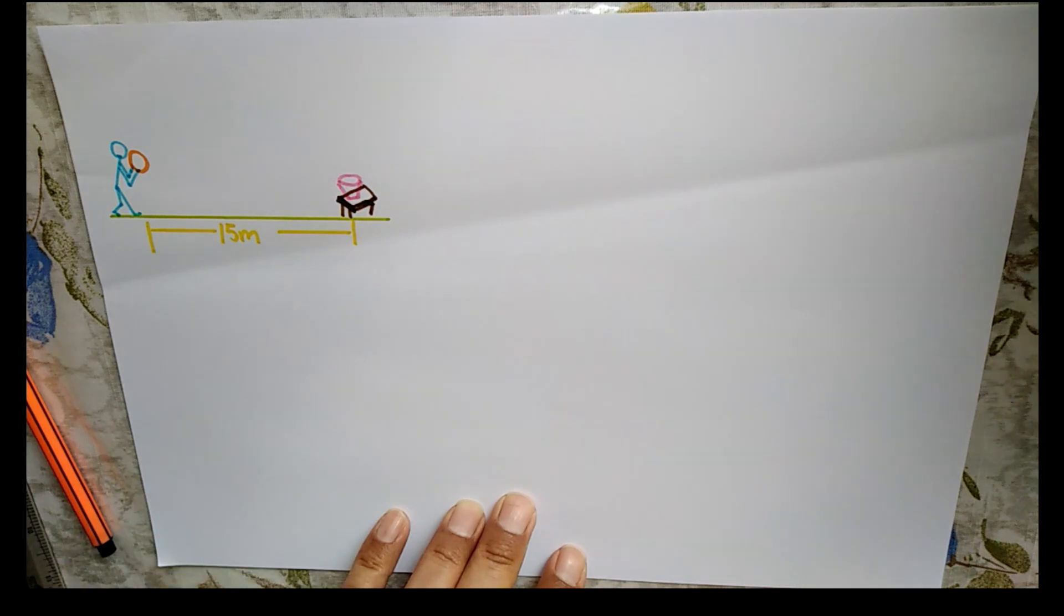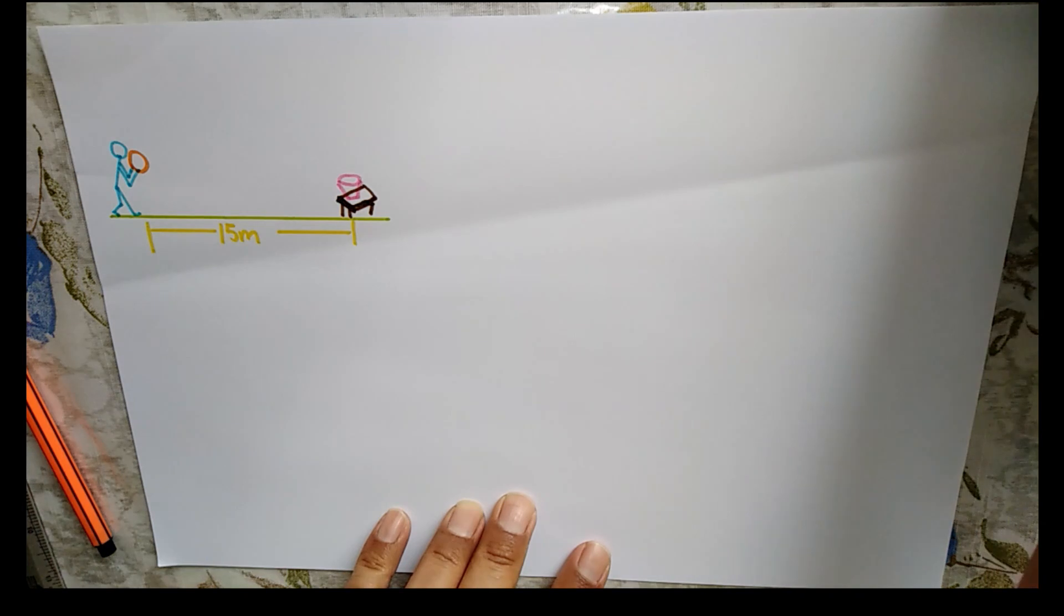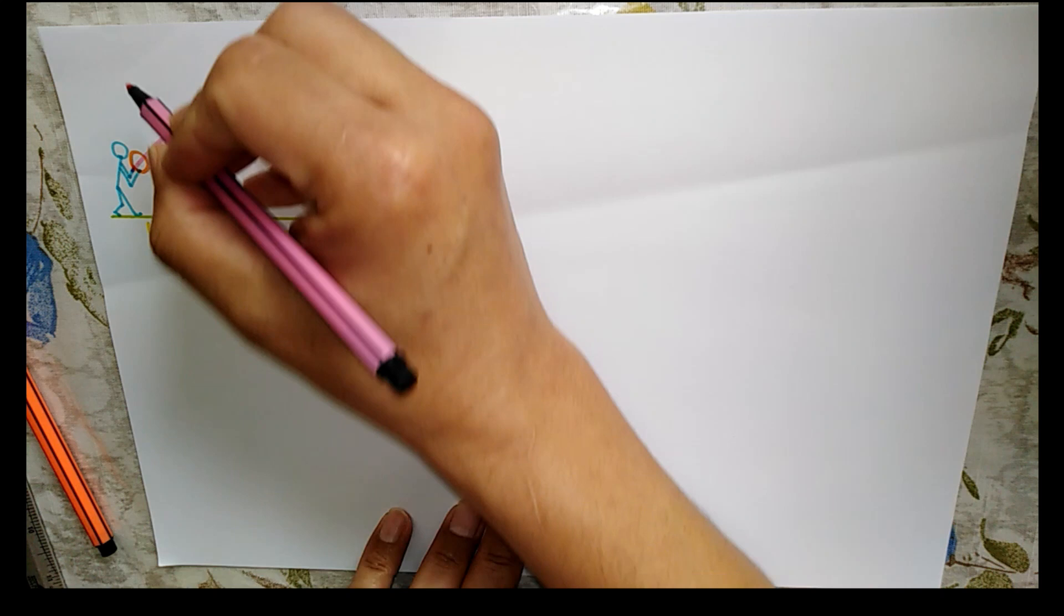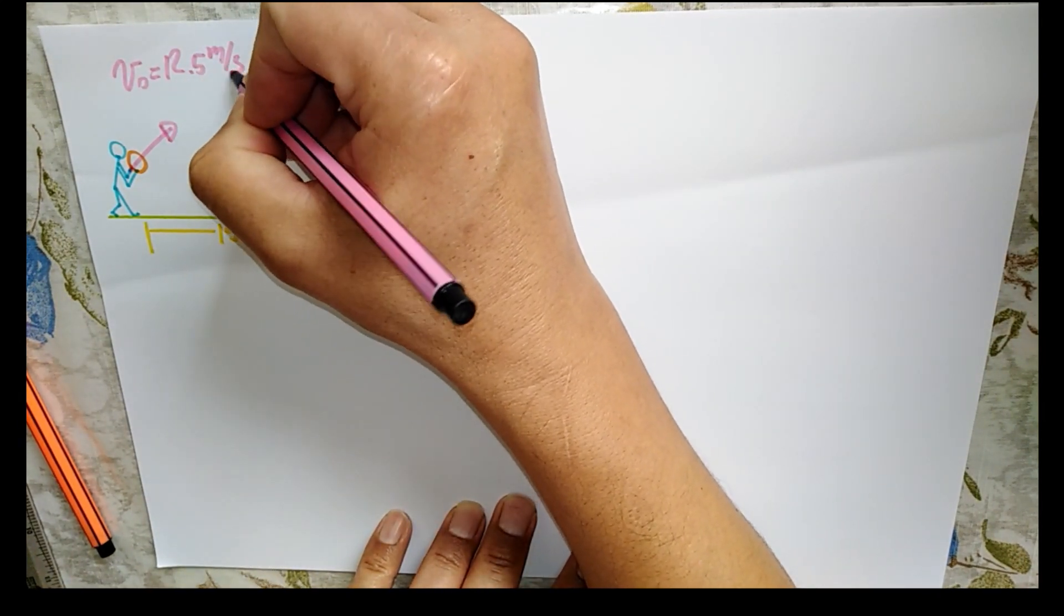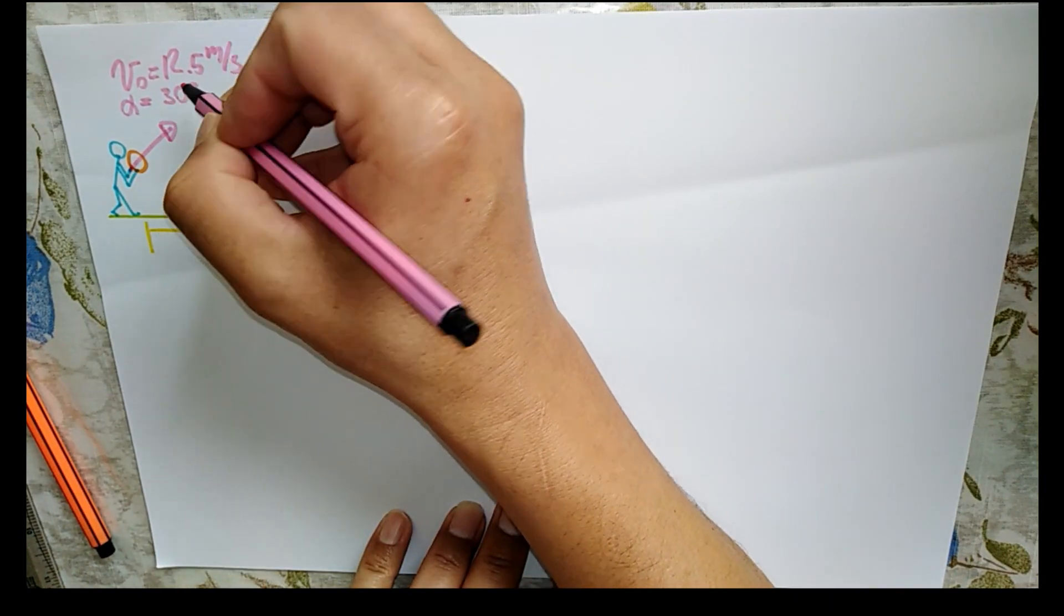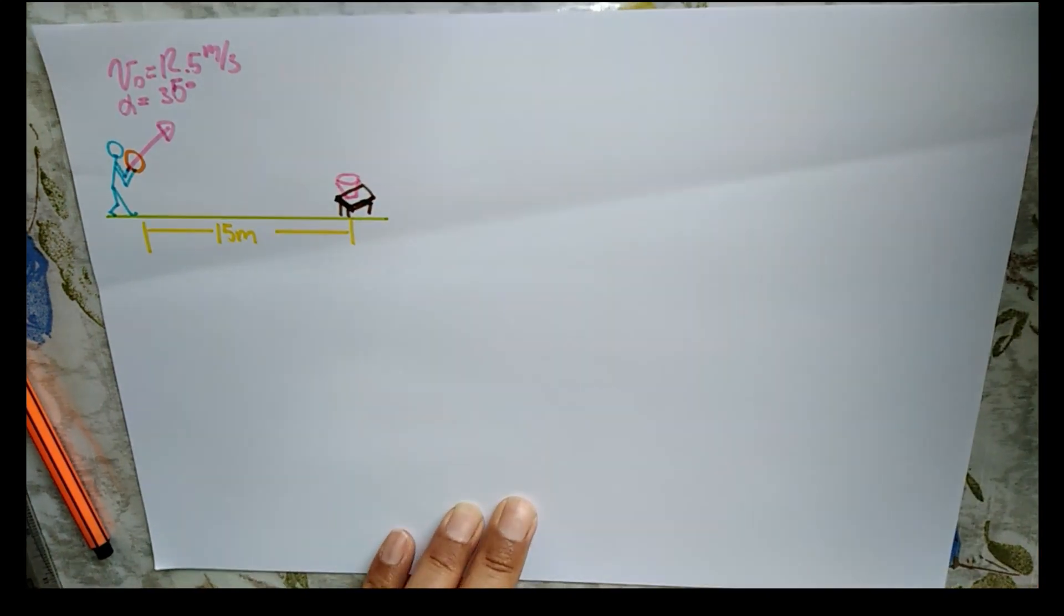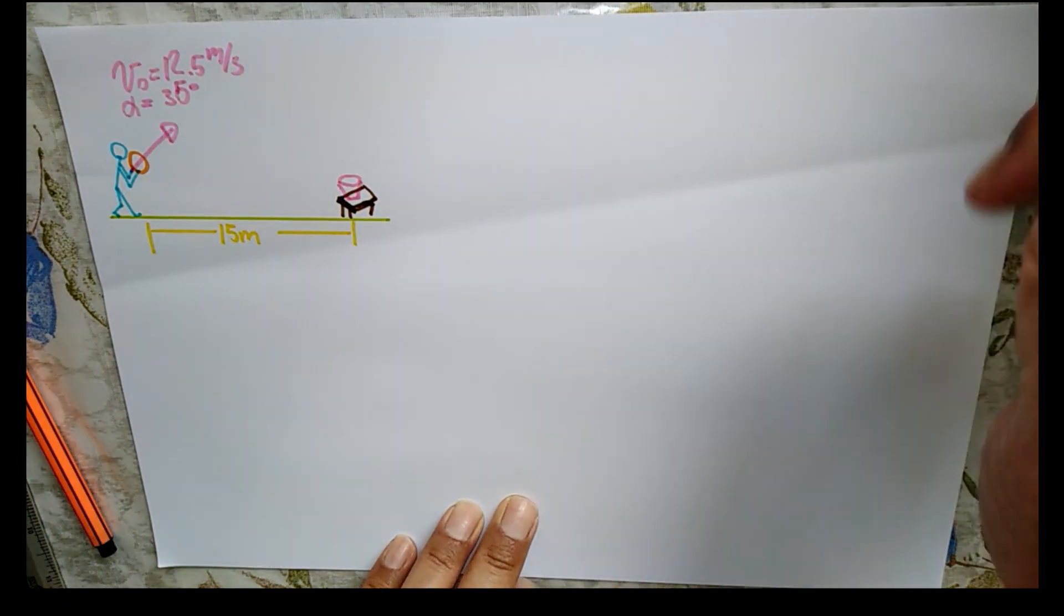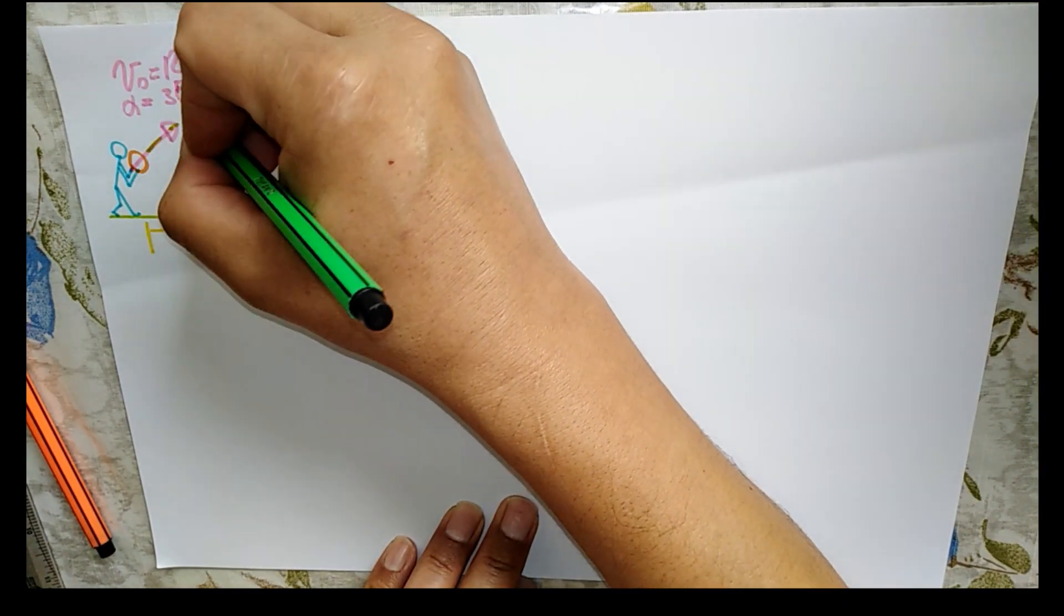Bueno, entonces veamos. Aquí tenemos a Juan lanzando la pelota y dice que lo lanza con una velocidad inicial de 12.5 metros por segundo y que el ángulo de inclinación era de 30 grados. Perdón, 35 grados. Entonces la idea de Juan al lanzar esa pelota era que cayera en el recipiente, ¿verdad?